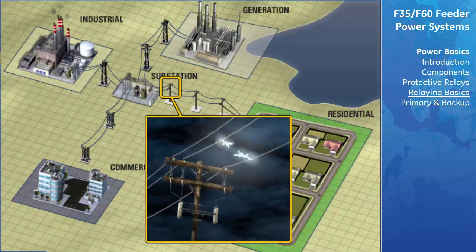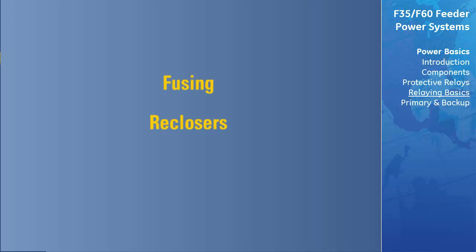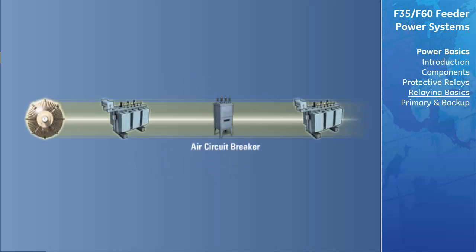Protective relays are not always part of a protection scheme. Fusing, reclosers, and sectionalizers are employed in some cases to keep costs down. Circuit breakers are located between each power system component, which makes it possible to isolate and disconnect the faulty component. If a breaker isn't installed between two adjacent components, both components will need to be disconnected for a failure in either one.